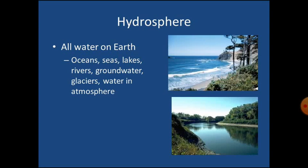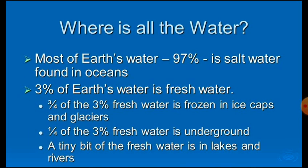More than 97% of the earth's water is found in the ocean and is too salty for human use. A large portion of the rest of the water is in the form of ice sheets and glaciers or underground, and a very small percentage is available as fresh water for human use. Hence, despite being a blue planet, we face a shortage of water.